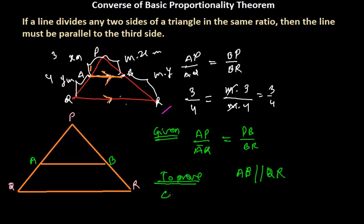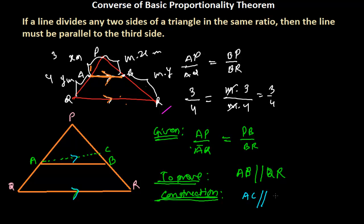Our construction is: from point A, let's draw a line parallel to QR. We will call this line AC, so AC is parallel to QR. We have imagined that AC is parallel to QR. Now let's go for the proof, with statements on one side and reasons on the other.